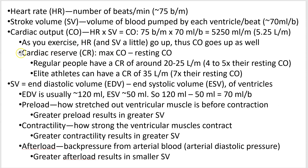The amount cardiac output can go up is called the cardiac reserve, or CR, which is your max cardiac output minus your resting cardiac output. So if you have a resting cardiac output of 5 liters per minute and you go for a really intense run and it gets up to 25 liters per minute — that's about five times — so 25 liters per minute in this case is your cardiac reserve. Super athletes can get up to about seven times or more.